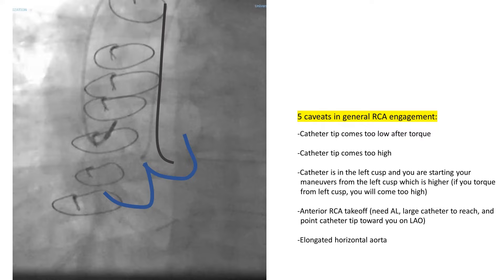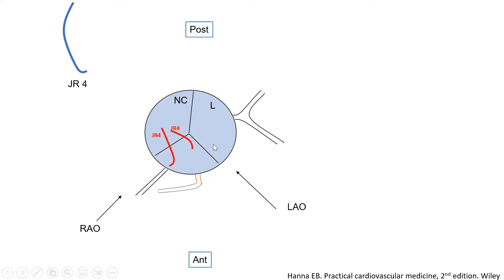A question: what about the catheter falling in the non-coronary cusp? In cases of persistent difficulty with engagement after trying all steps, it is possible you are in the non-coronary cusp. You can identify this with an RAO image — in RAO, you will see the left and right cusps overlapping on one side, and the non-coronary cusp on the other, with a ridge on one side and an aortic wall on the other. In that case, pull up, push it down aiming in a different direction, then return to LAO to confirm you're on the right cusp, not the left.